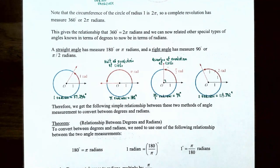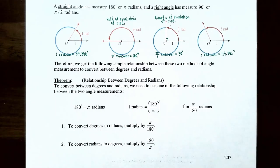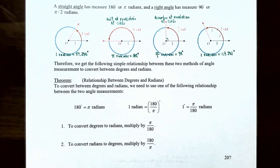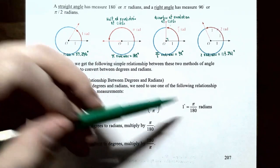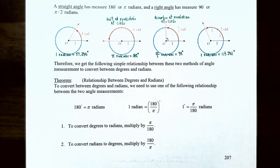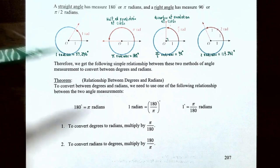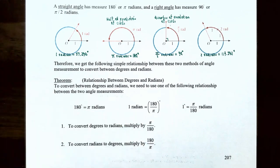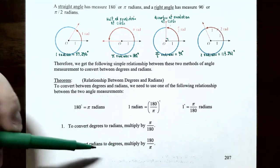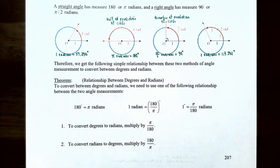The relationship between degrees and radians: 180 degrees equals pi radians, or 1 radian equals 180 divided by pi degrees, or 1 degree equals pi divided by 180 radians — any of these three are equivalent. To convert degrees to radians, multiply your degree measurement by pi divided by 180. To convert from radians to degrees, multiply your radian measurement by 180 divided by pi.